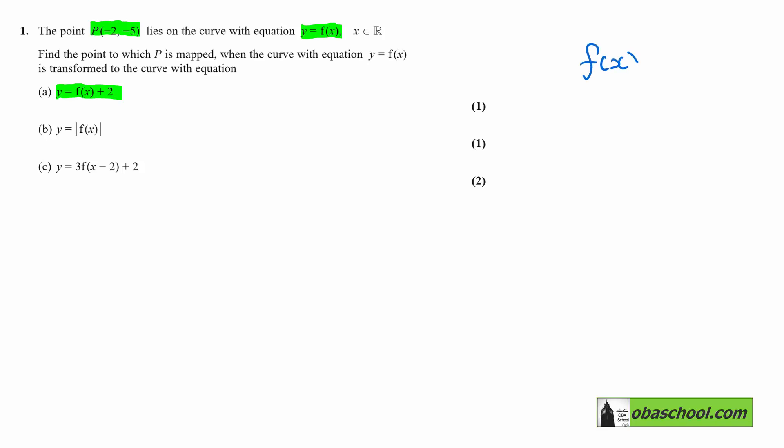If we consider f(x) + 2 with the 2 added outside, this is a vertical translation 2 units upwards.